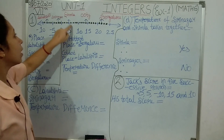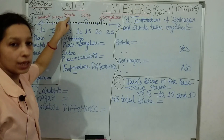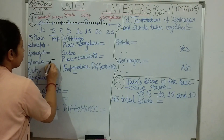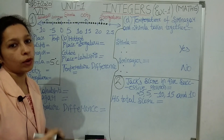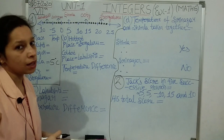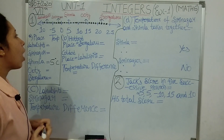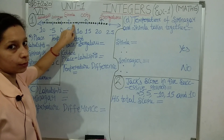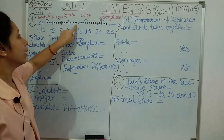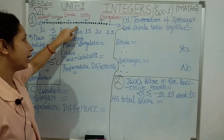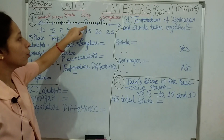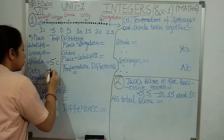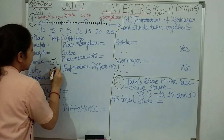So 5 is showing the place Shimla. The temperature of Shimla is 5 degree Celsius. Continuing along: 6, 7, 8, 9, 10, 11, 12, 13, 14. At 14 there is an indication — 14 is indicating Uti. So the temperature of Uti is 14 degree Celsius. Then 16, 17, 18, 19, 20, 21 and 22. So the temperature of Bengaluru is 22 degree Celsius.